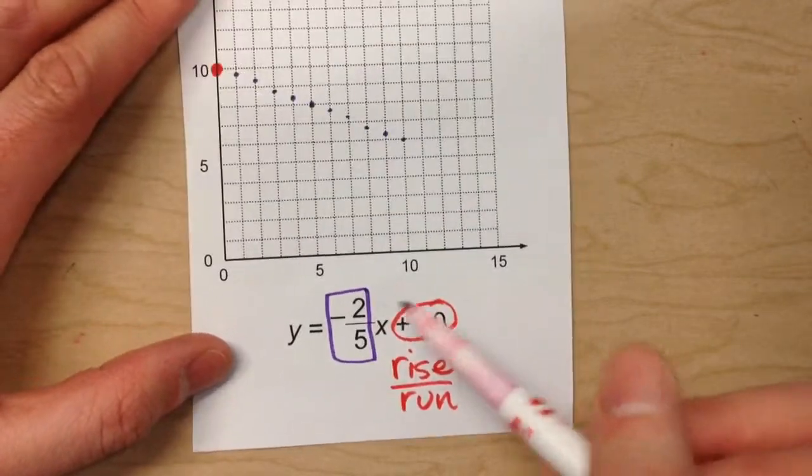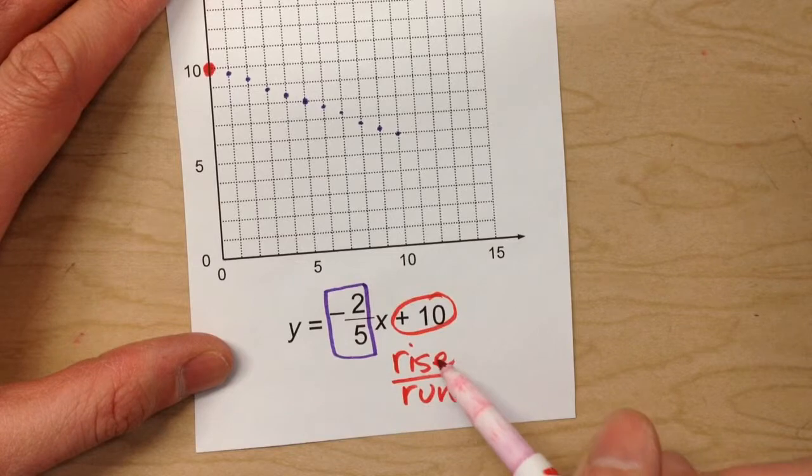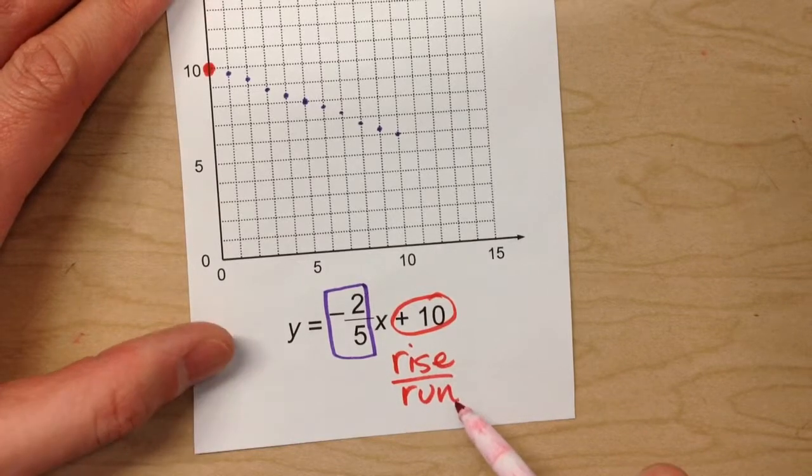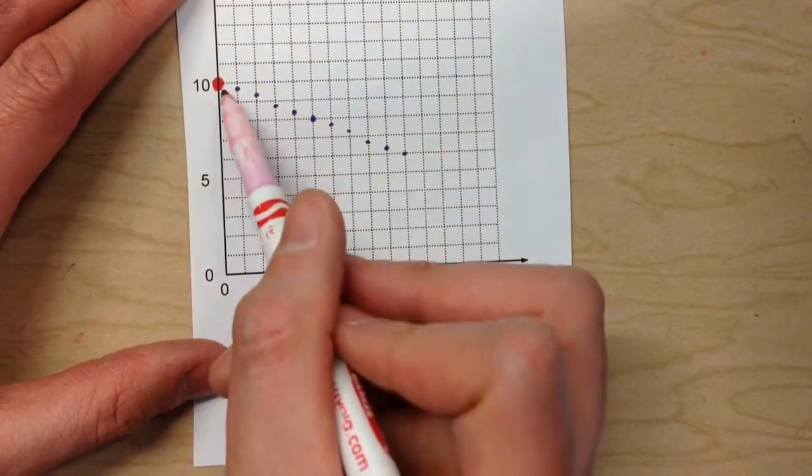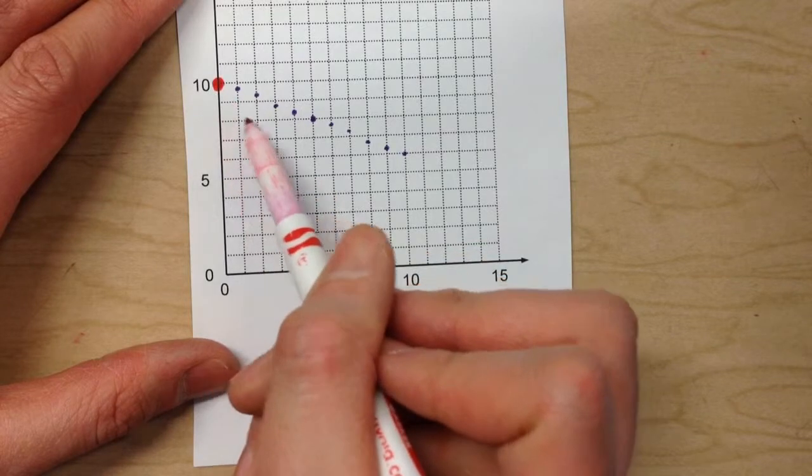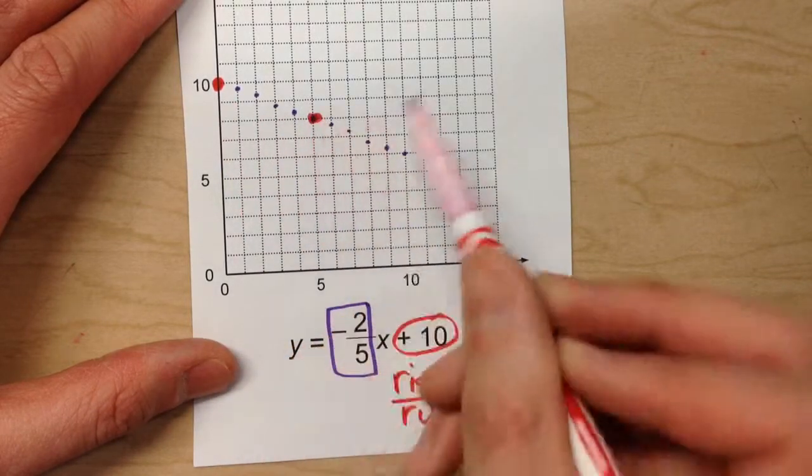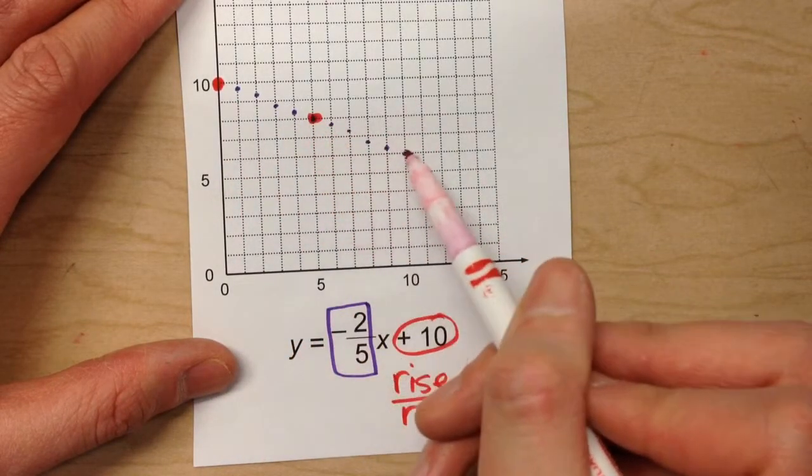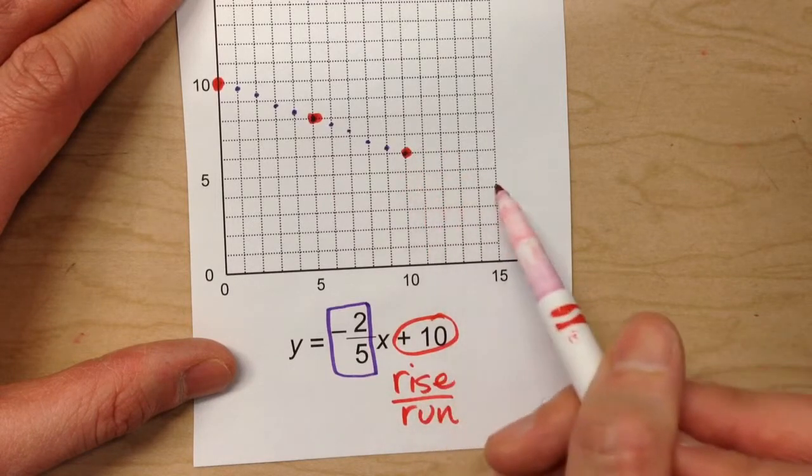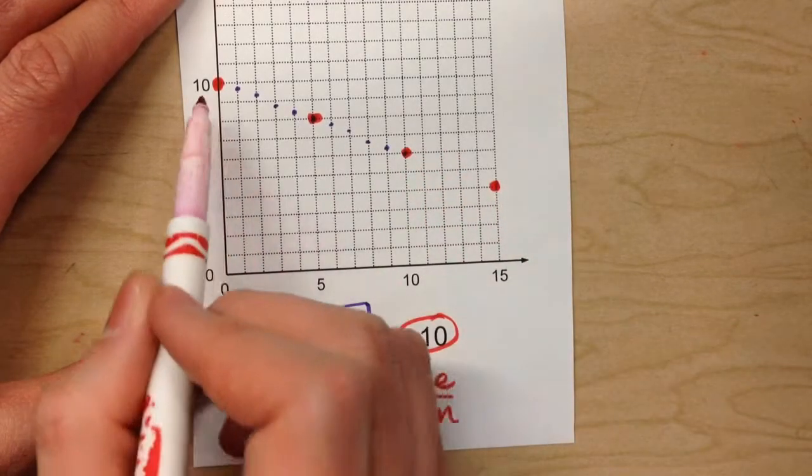So if our slope is negative 2 over 5, that means go down 2, right 5, and we'll have the next point. So here, down 2, right 5, plot a point. Down 2, right 5, plot a point. Down 2, right 5, plot a point.